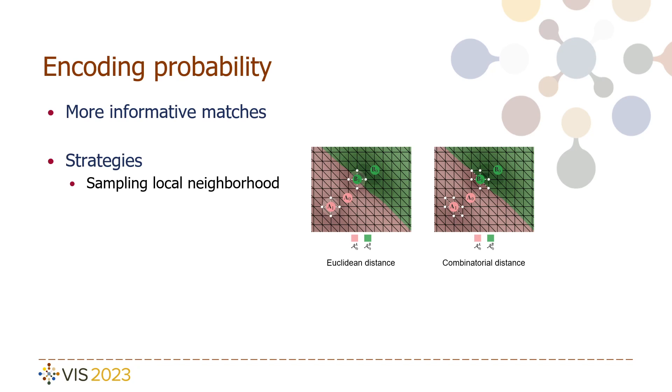For the examples in the figure on the right, we have for the Euclidean distance that B1 is matched with A0 with 60% probability and to B0 with 40%. For the combinatorial distance, we instead have 43% and 57% respectively. A1 is 100% matched to A0 with both distance functions.